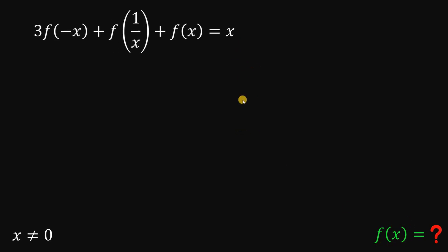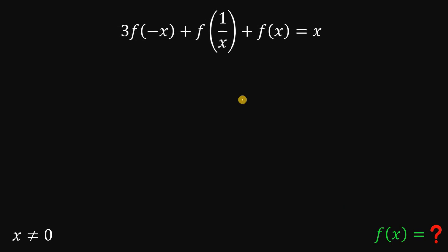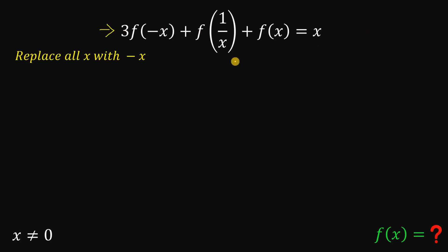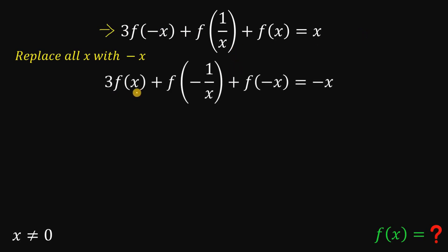To answer this kind of question, the first thing we need to do is replace all x with negative x. Using our original equation, replacing all x with negative x gives us: 3 times f of x, plus f of negative 1 over x, plus f of negative x, equals negative x.